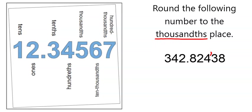And what this tells us is that we're going to cut off our number after that 4. So we'll have 342.82, and then after the 4 we're going to cut everything off. But depending on the value of what we're cutting off, that 4 may stay a 4 or it could go up to a 5.